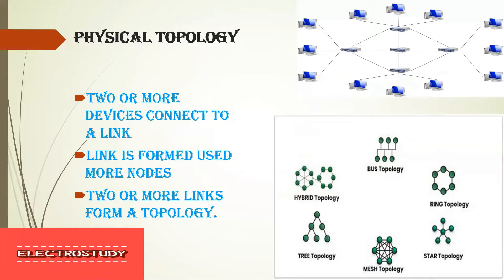What is physical topology? Topology is nothing but the structure of the network. There are two kinds of topology: physical and logical topology. Physical topology means the geometric representation of the network. There are different types of topologies: bus topology, ring topology, star topology, mesh topology, tree topology, and hybrid topology.